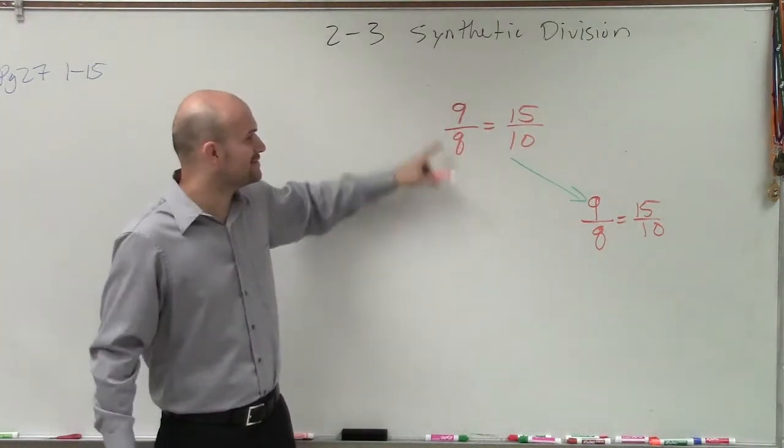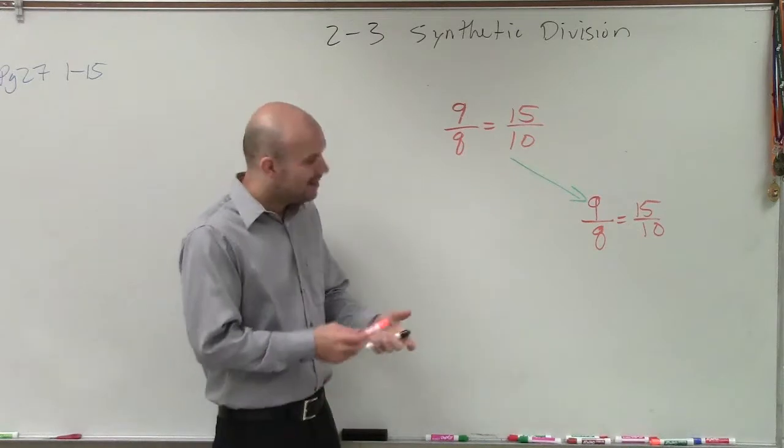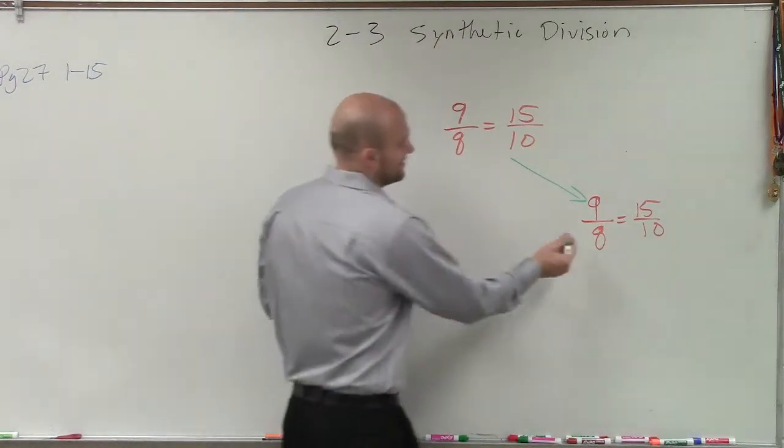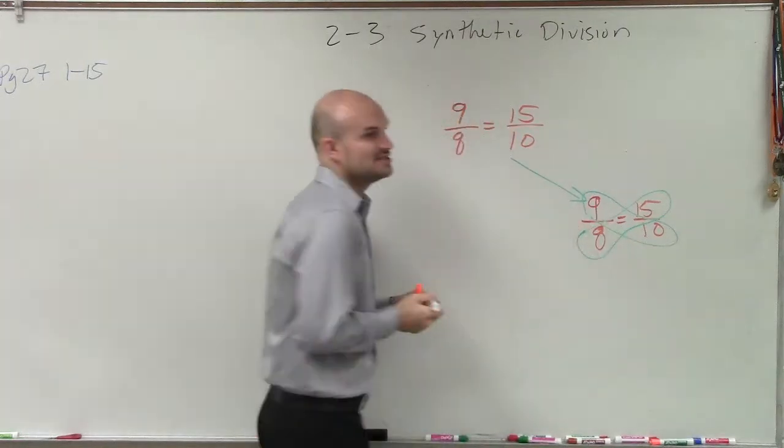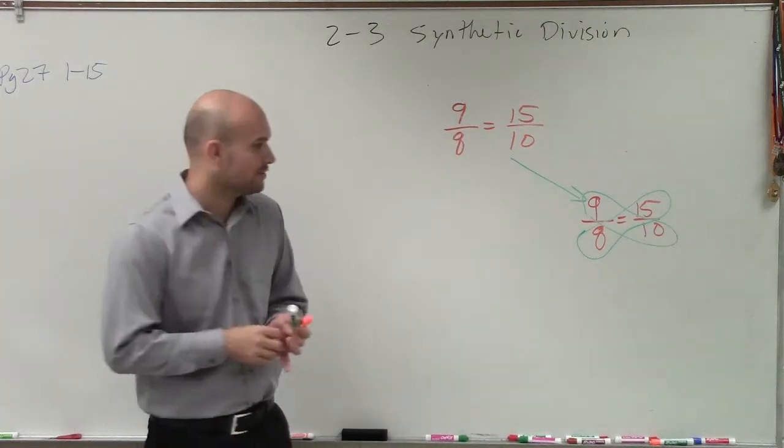I thought you might make sure to the 9 and the q. But anyways, you can just cross multiply. Since you have a proportion, an equation equal to an equation, you can cross multiply.